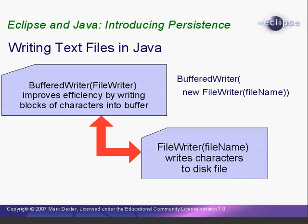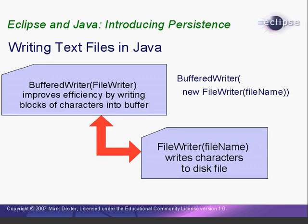We connect the FileWriter object to a BufferedWriter object. This automatically buffers the output, which is a fancy way of saying that the data is written to the disk in large chunks and is much more efficient. The nice thing about this is that it all happens behind the scenes. All we need to do is use the BufferedWriter object and the rest is automatic. This will be clearer when we see the code, which is what we'll do now.